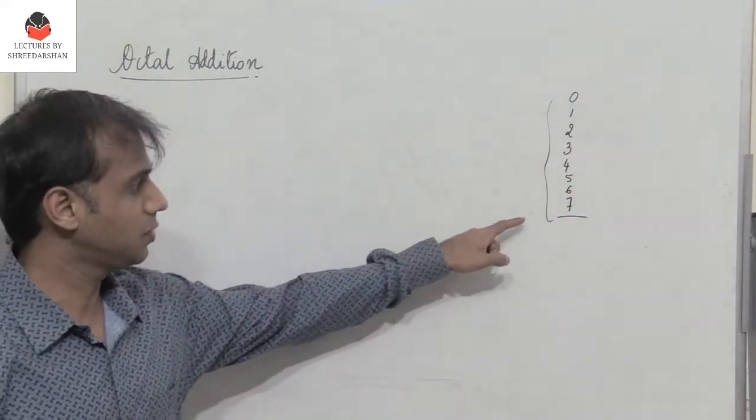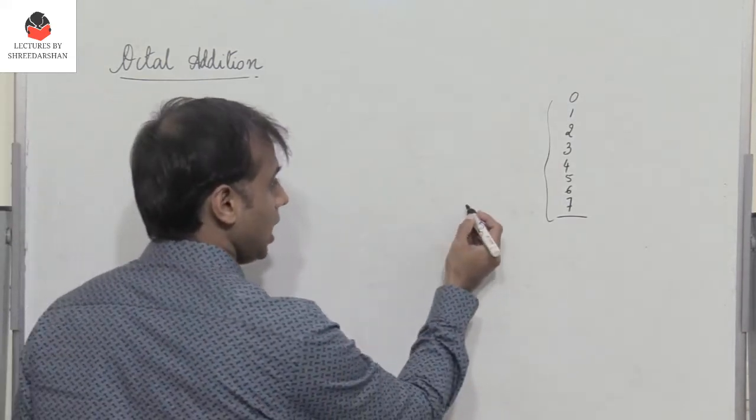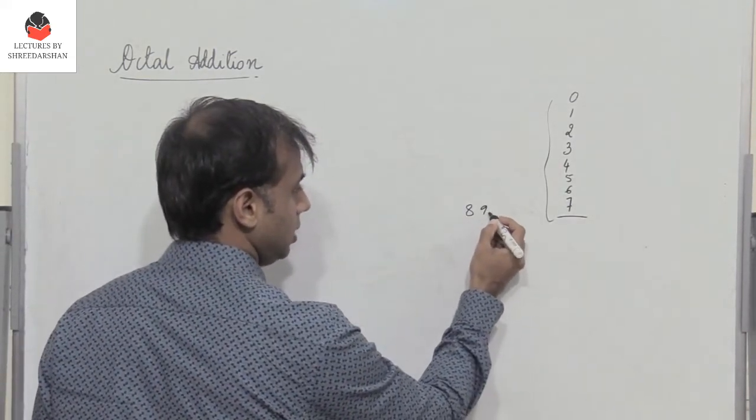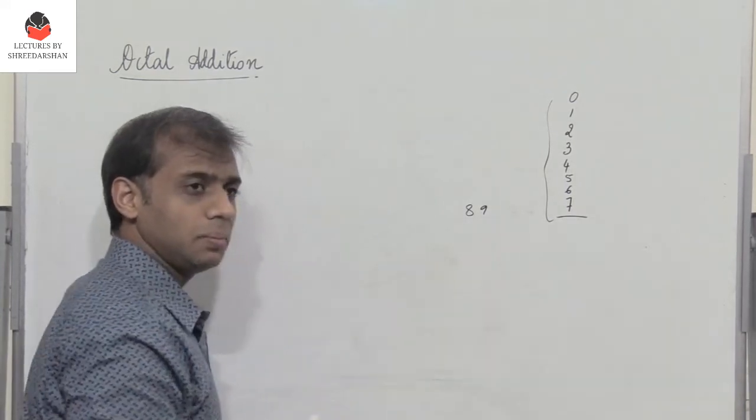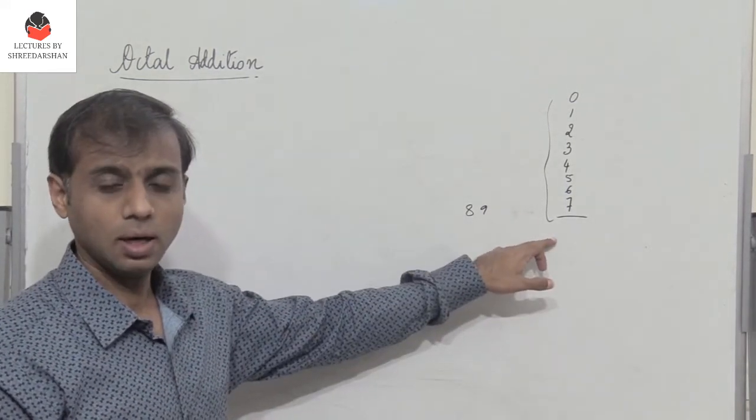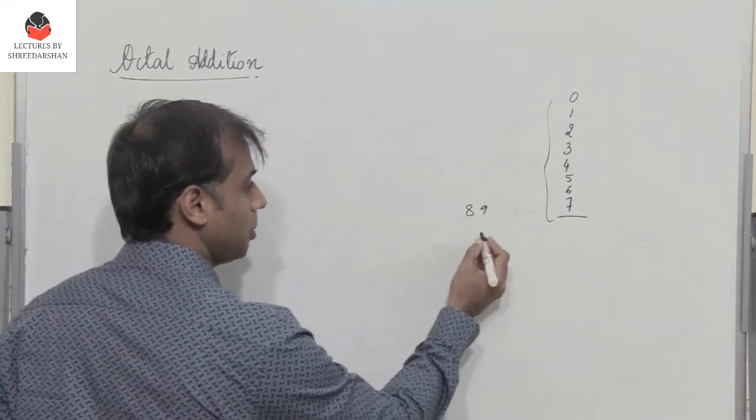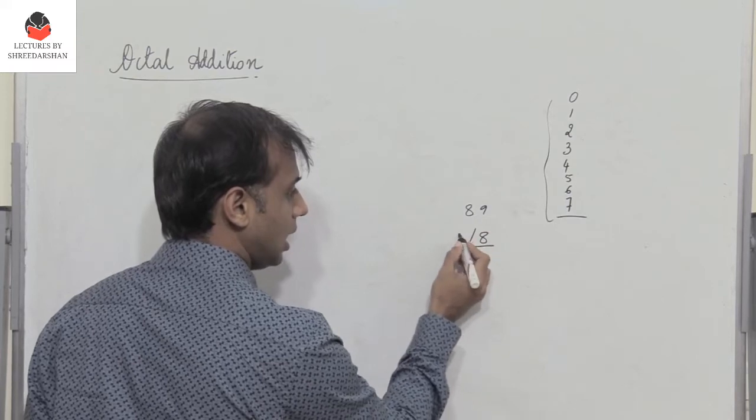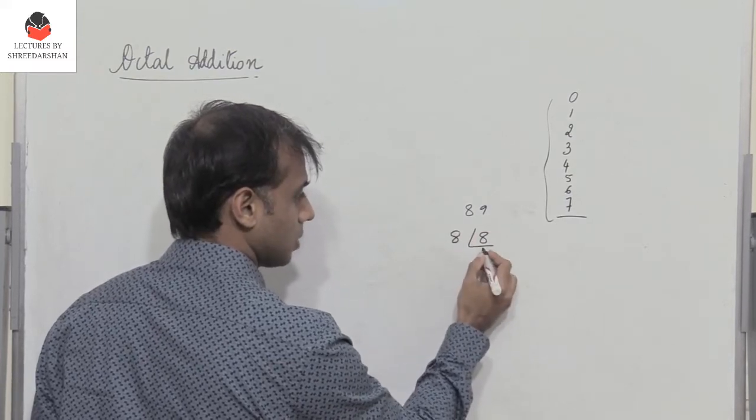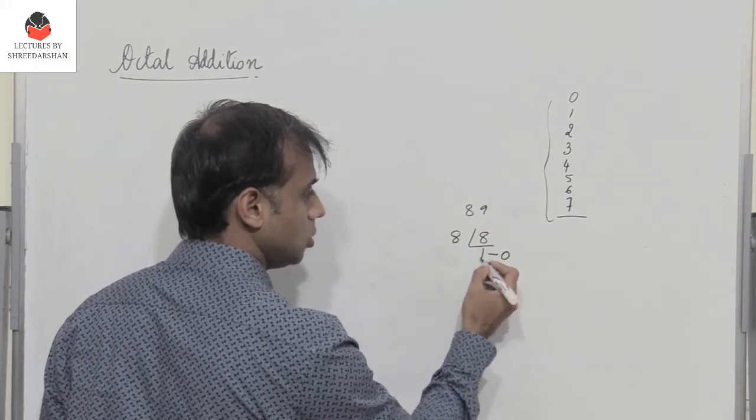What happens if the number becomes greater than 7? Say we have a number 8, 9, etc. If the number is greater than 7, I have to divide the number by 8. So how do I represent 8? In octal, I divide it by 8. 1 is the quotient, 0 is the remainder.